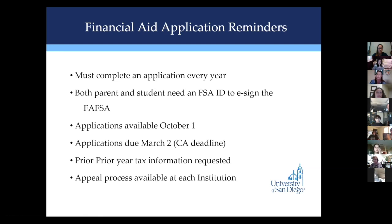That application period opens October 1st, and there is a California deadline of March 2nd. If you're planning to apply to schools outside of California, there might be other deadlines — something you want to check on with each individual university. I suggest filling it out in October. If you miss the March 2nd deadline, you will not be eligible for the Cal Grant, so it's very important you make that deadline. In order to sign the FAFSA electronically, parents and students are going to need what's called an FSA ID. Both parent and student will need their own unique FSA ID. You're going to use it year after year to sign the FAFSA and in order to borrow loans. Parents — if this is your first student going to college and you have younger children, you are going to use that same FSA ID for all of your children.